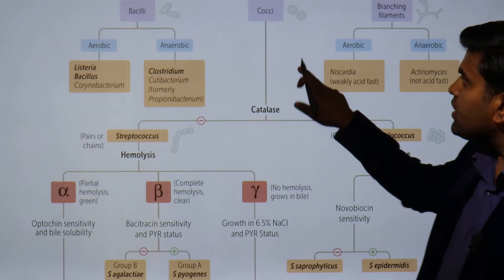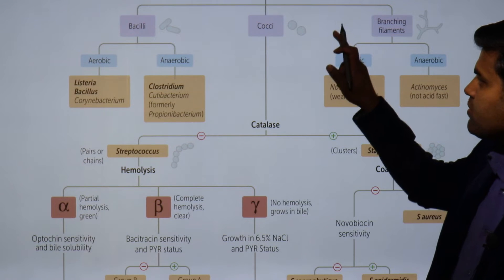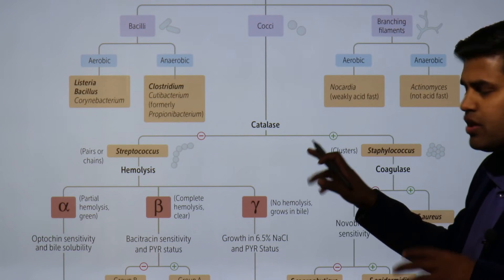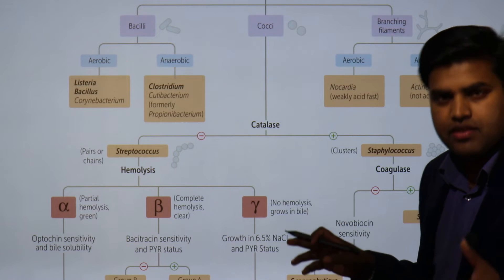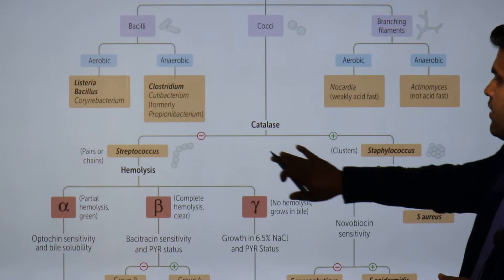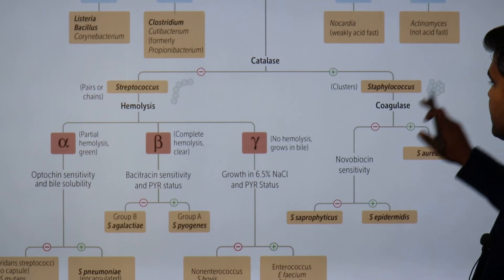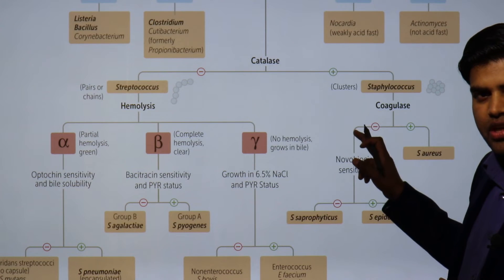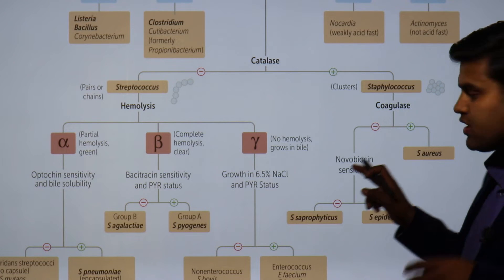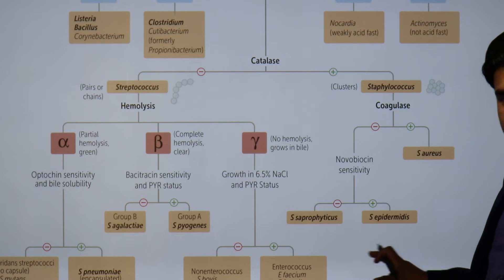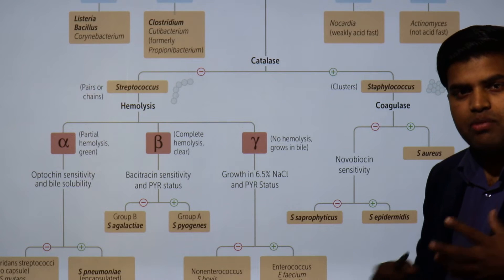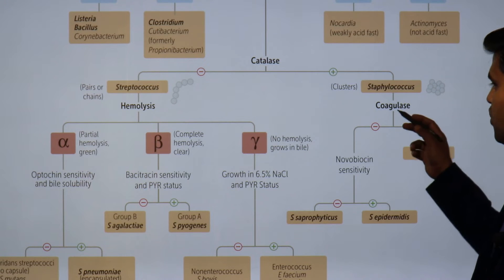Then we are talking about gram-positive cocci, which were divided by the catalase test into catalase-positive and catalase-negative organisms. The catalase-positive were the Staphylococcus group — a cluster group of organisms. Three important species are Staphylococcus aureus, saprophyticus, and epidermidis, and all can be differentiated by a test known as the coagulase test.